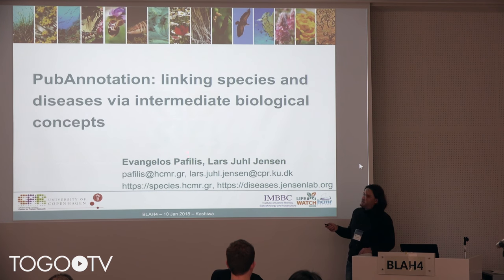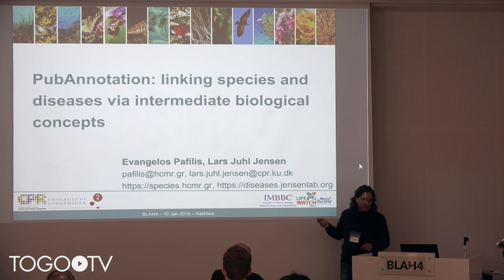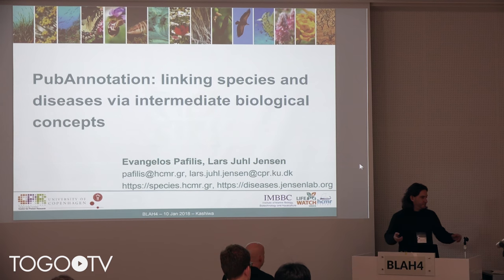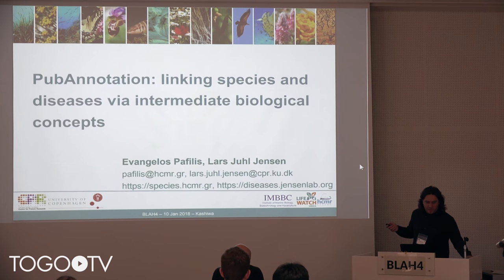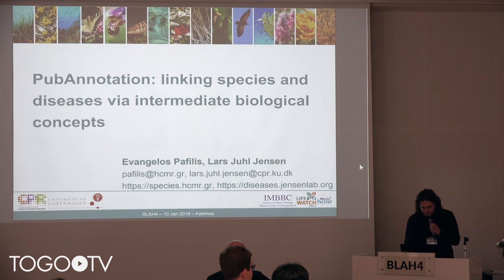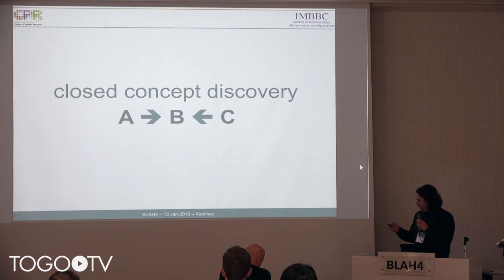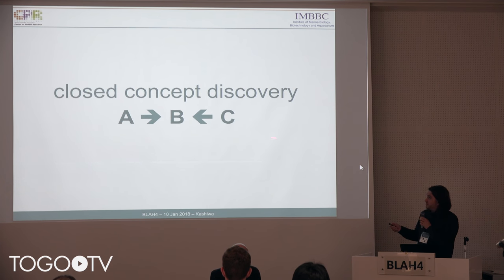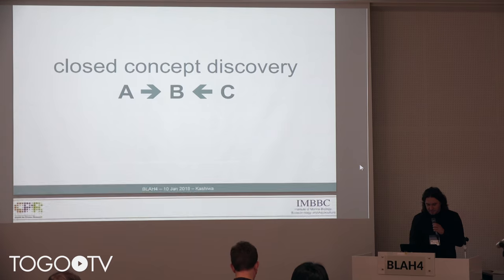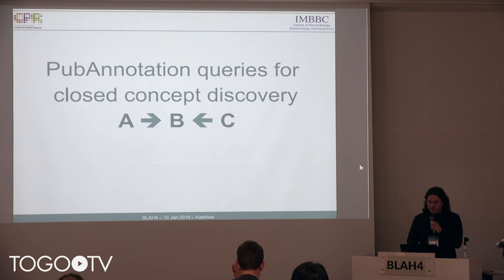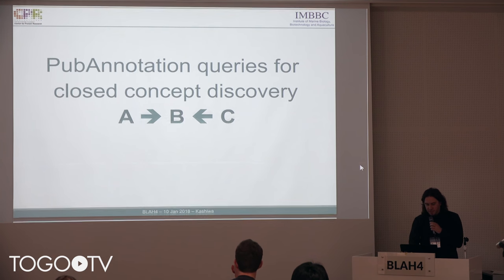So what you will see here is where we stand after many years of collaboration on projects similar to the talk you saw before. The concept, the idea is how we can use closed concept discovery — where one can calculate the relationships between A to B and C to B — to try to find indirect relationships between two entity types, based on information available in the PubAnnotation, or information that we aim to bring into PubAnnotation.